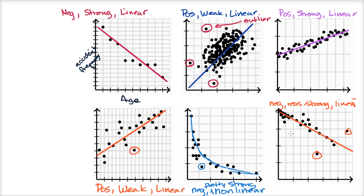Hopefully this makes you a little bit familiar with some of this terminology. It's important to keep in mind this is a little bit subjective — there'll be some cases that are more obvious than others. Oftentimes you want to make a comparison: this is a stronger positive linear relationship than this one because you can see most of the data is closer to the line. This one is for sure more non-linear than linear. It often comes down to making a comparison or a subjective call on how to describe the data.